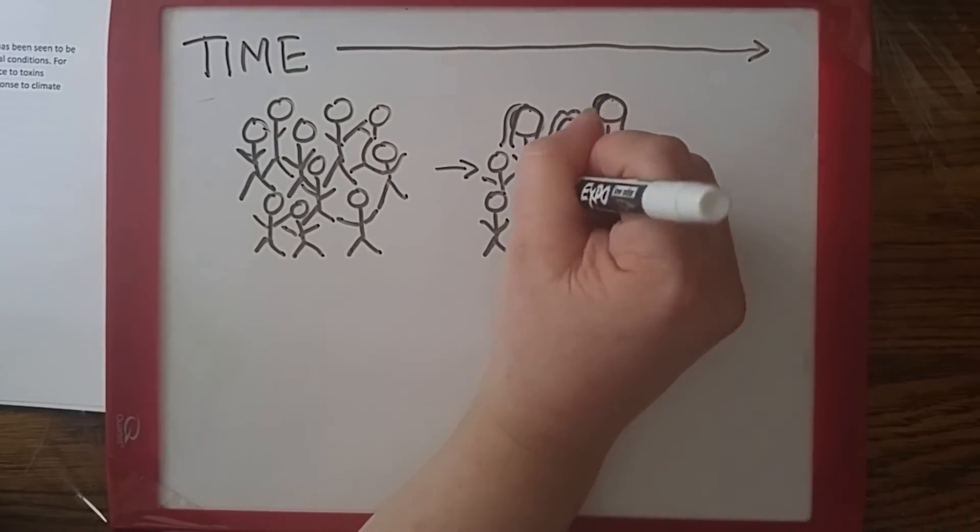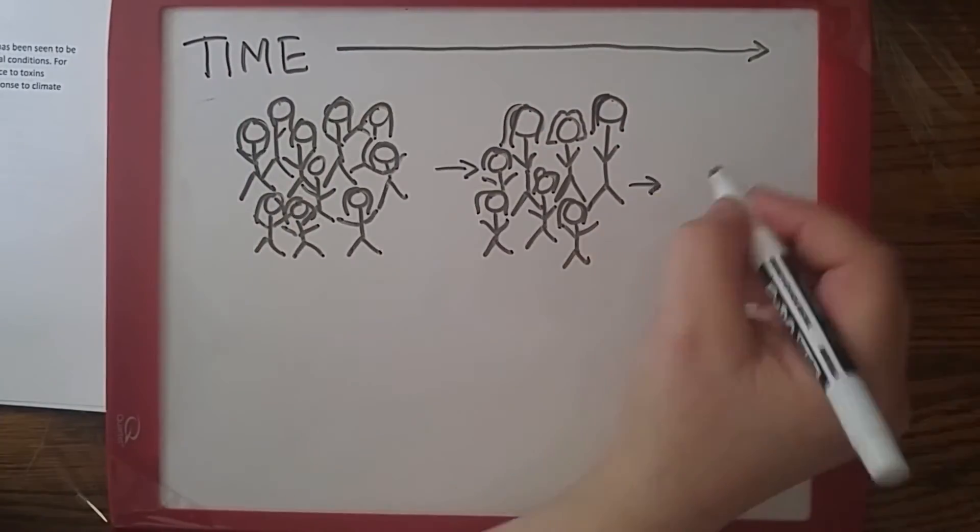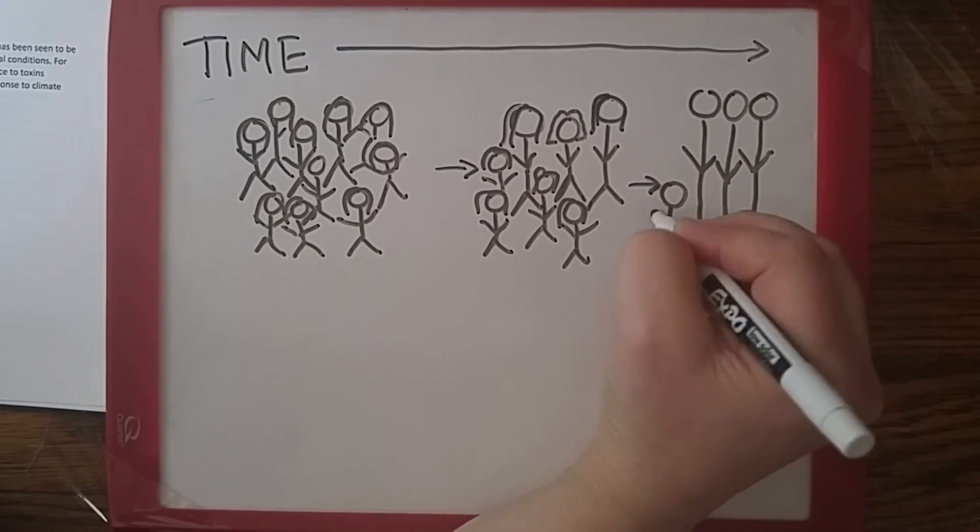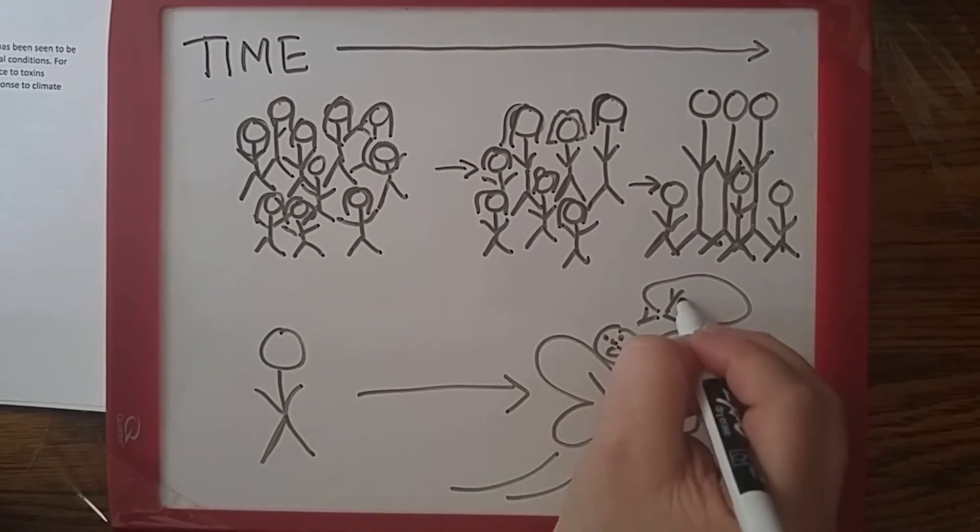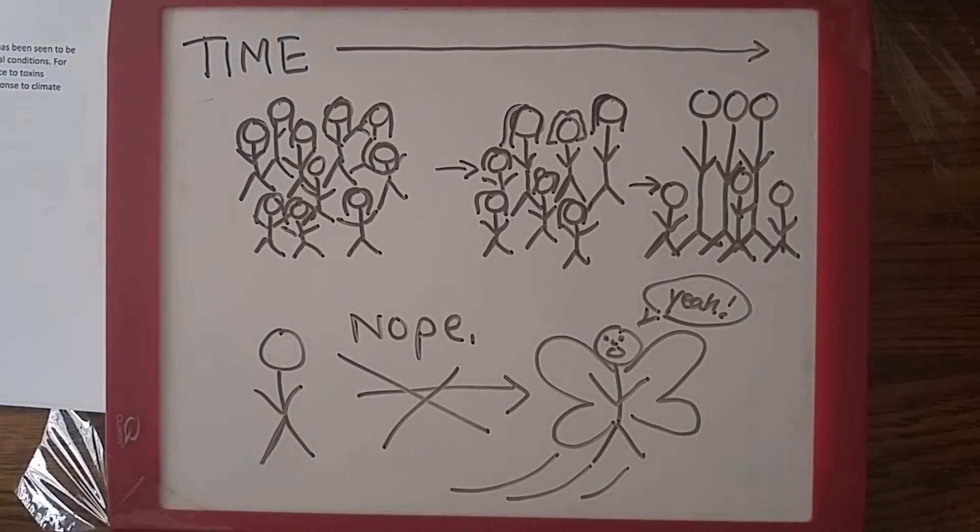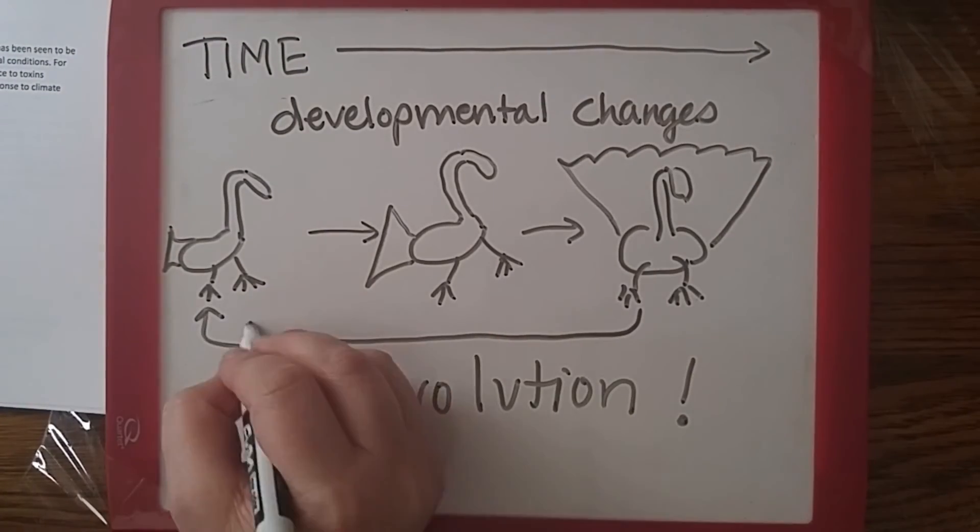Individuals can change over the course of their lifetime due to developmental changes, such as a male bird developing colorful plumage as it reaches sexual maturity, or changes caused by an environmental response, such as a bird losing its feathers after becoming infected with a parasite.